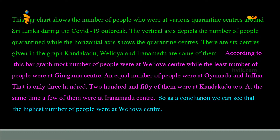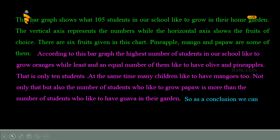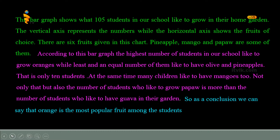You have to write other questions using the same format. Now let's move to Practice Paper 5. The following bar graph shows what 105 students in your school like to grow in their home garden. Write a description based on the information given in the chart. You can use these adjectives. First, notice whether the question is given in present tense or past tense. In this question, the question is given in the present tense. This bar graph shows what 105 students in our school like to grow in their home garden. The vertical axis represents numbers.